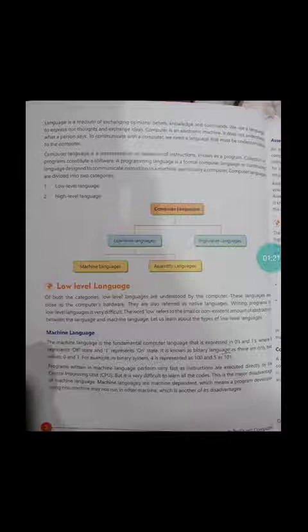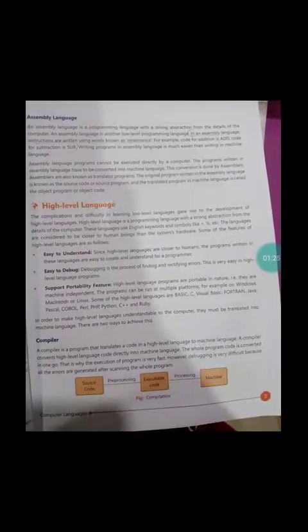There are two types of languages: machine language and assembly language. Machine language is a fundamental computer language expressed in zeros and ones, where zero represents off state and one represents on state. It is known as binary language. For example, in binary system, 4 is represented as 100, 5 as 101.